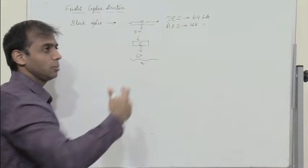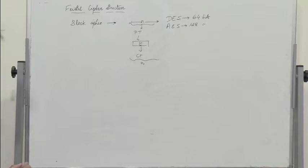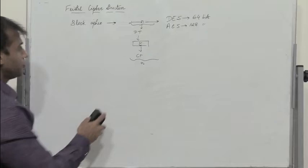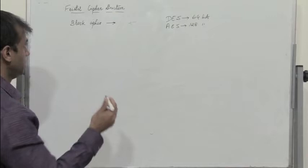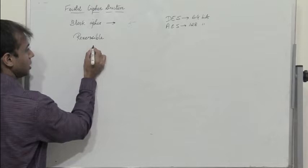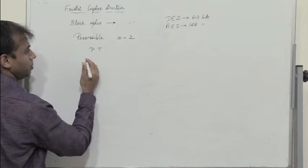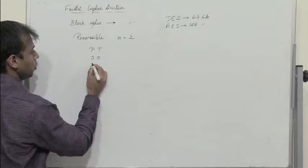Most symmetric ciphers are block ciphers. Now when we have to design a generalized Feistel cipher structure, the fundamental motivation is that the mapping should be reversible. Now what do we mean by reversible mapping? Let us consider n equal to 2. In such a case, we have the plain text, and if n is equal to 2, that means we have 2 bits, so we can have 4 combinations: 00, 01, 10, 11.